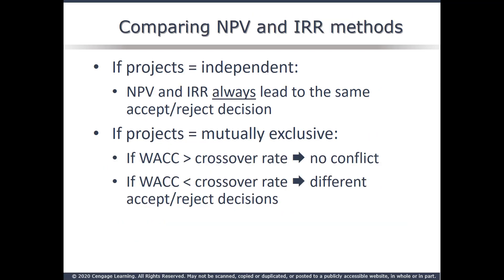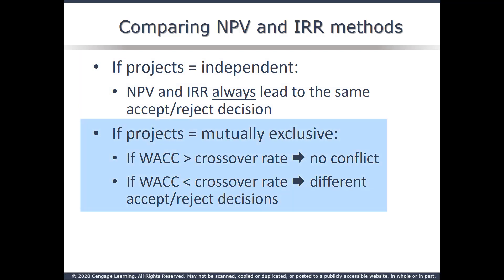Comparing NPV and IRR: if the projects are independent, NPV and IRR always lead to the same accept-reject decision. If the projects are mutually exclusive, that's where the conflict can happen. If the cost of capital is greater than the crossover rate, no conflict. If it's less, you're going to have conflicting decisions.